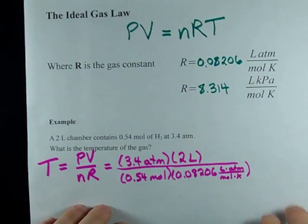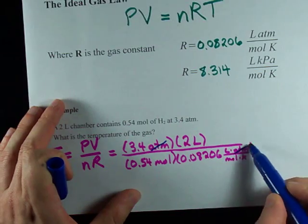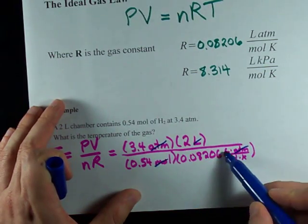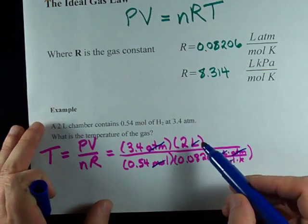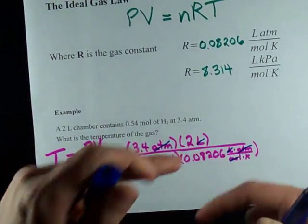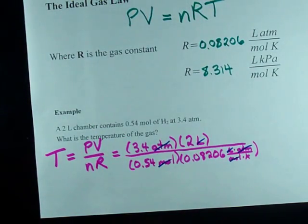Now, just to show you guys that I'm serious about these units, atmospheres cancels with atmospheres, moles cancels with moles, liters cancels with liters, and I'm left with 1 over Kelvin on the bottom, which flips back up to Kelvin, which is the unit I need for temperature. Beautiful.